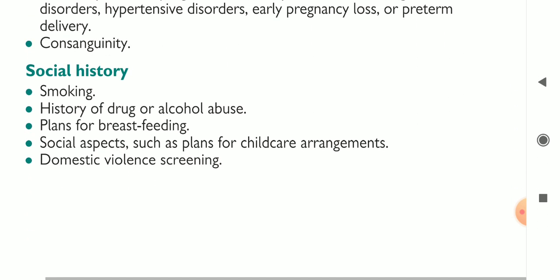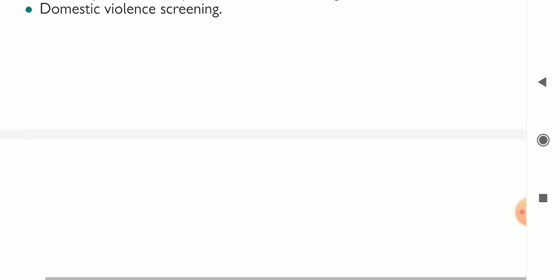Social history includes smoking history, drug or alcohol abuse, plans for breastfeeding, and social aspects such as childcare arrangements, domestic violence screening. These are all the points which help us in taking the history of the pregnant lady.